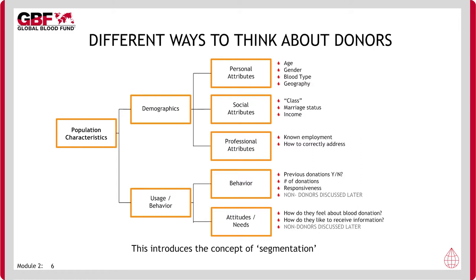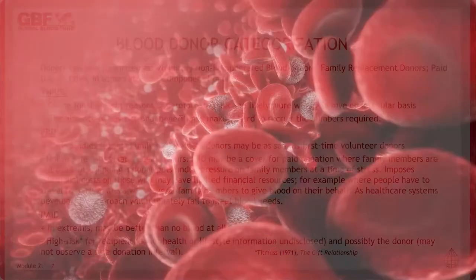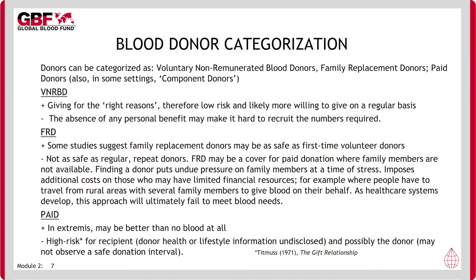In the coming slides, demographic, behavioral, and attitudinal aspects of donors will all be discussed. We have previously identified three distinct donor categories: voluntary non-remunerated, family replacement, and paid. We note at this point that there is a fourth donor type — the component donor. However, apheresis is not common in resource-poor settings because of the high cost of equipment and consumables required for specific red cell, plasma, or platelet donation. Therefore, this will not feature in our discussion.